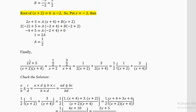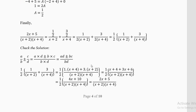So the partial fractions for (2x + 5)/((x + 2)(x + 4)) are (1/2)/(x + 2) plus (3/2)/(x + 4), which can be written as 1/(2(x + 2)) plus 3/(2(x + 4)). Taking 1/2 common: (1/2)[1/(x + 2) + 3/(x + 4)]. You can manage these fractions at the time of integration or simplify now.